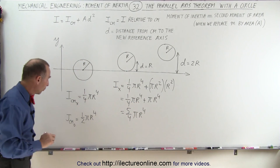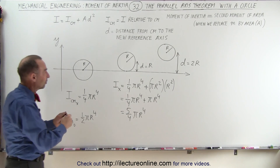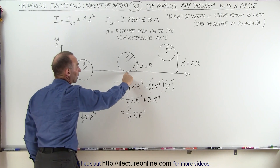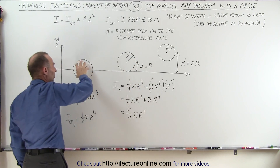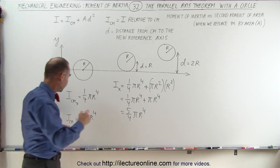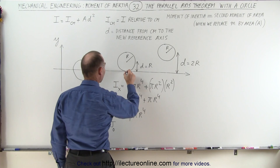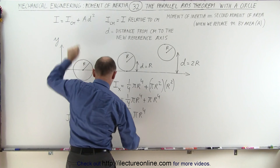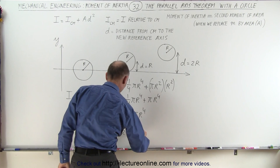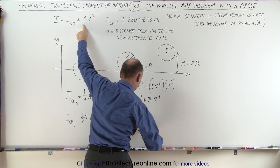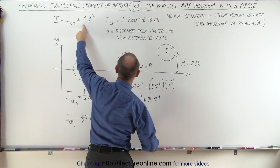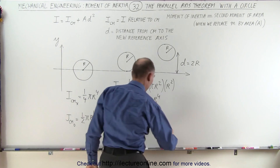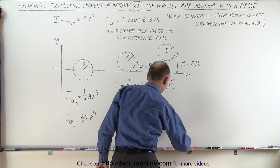Now, what would it be when we want to do it relative to the center of the circle? Here we have the circle rotating about this point on the x-axis. The moment of inertia relative to that point is equal to the moment of inertia relative to the center mass — one-half pi r to the fourth — plus the area of the circle, pi r squared, multiplied by the distance squared, r squared. So we have one-half pi r to the fourth plus a whole pi r to the fourth, which equals three-halves pi r to the fourth.